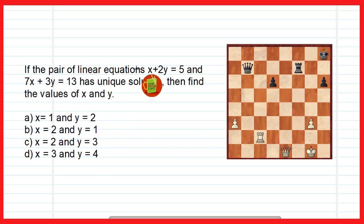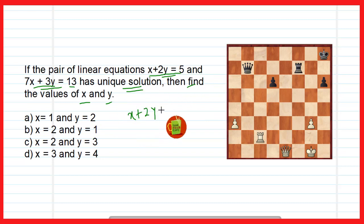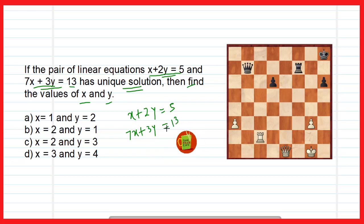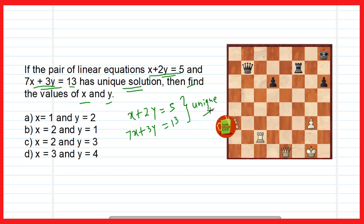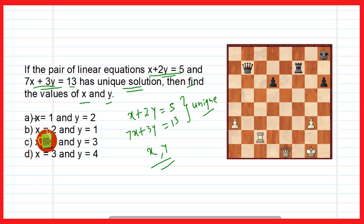Question 5: If the pair of linear equations x + 2y = 5 and 7x + 3y = 13 has a unique solution, find the value of x and y. The two equations are x + 2y = 5 and 7x + 3y = 13, and it is said both equations have a unique solution. Find x and y from the four options given. Write your answer in the comment box — whether option A or option B is correct.